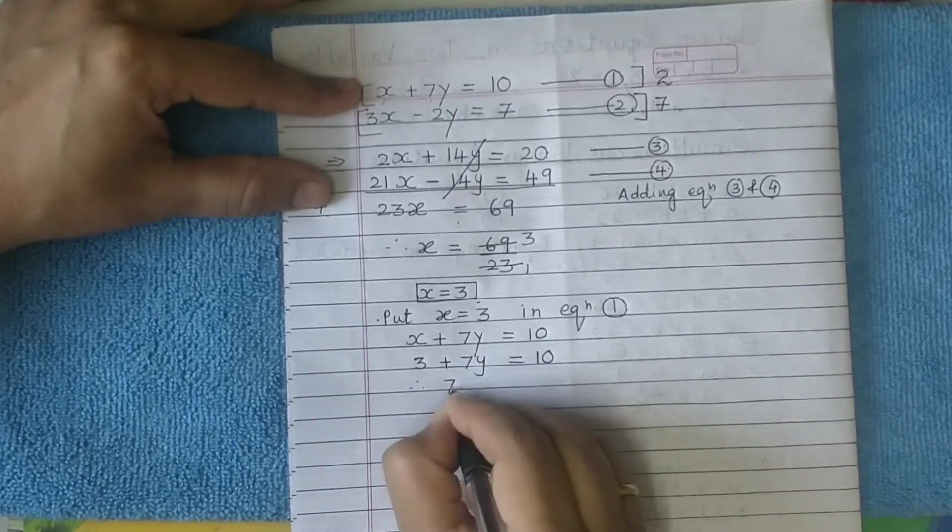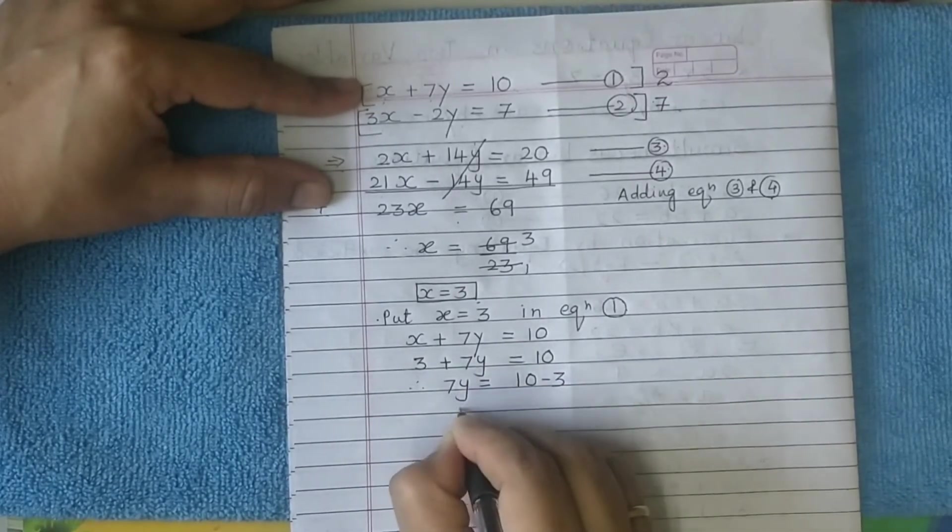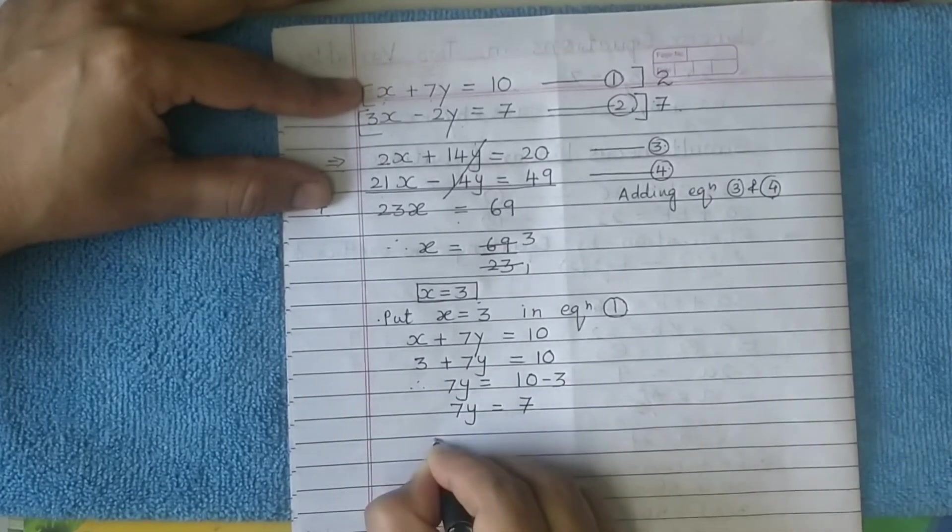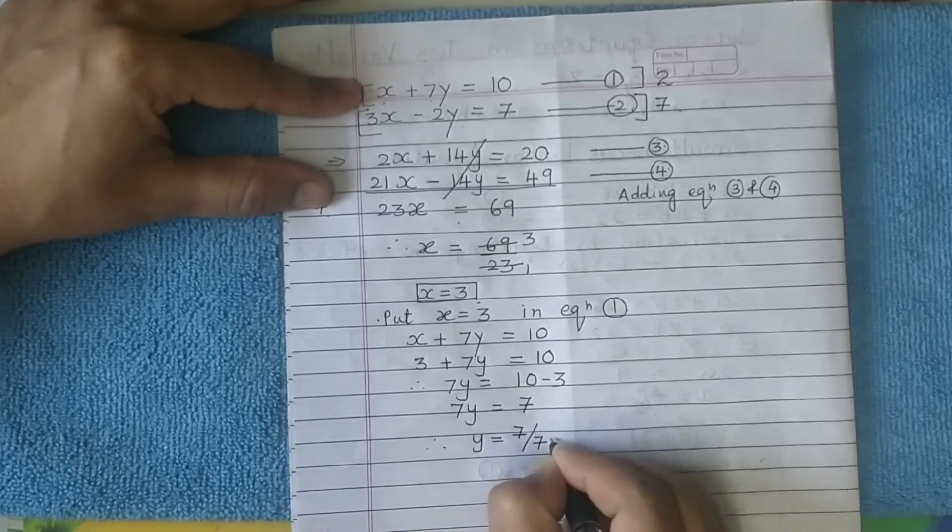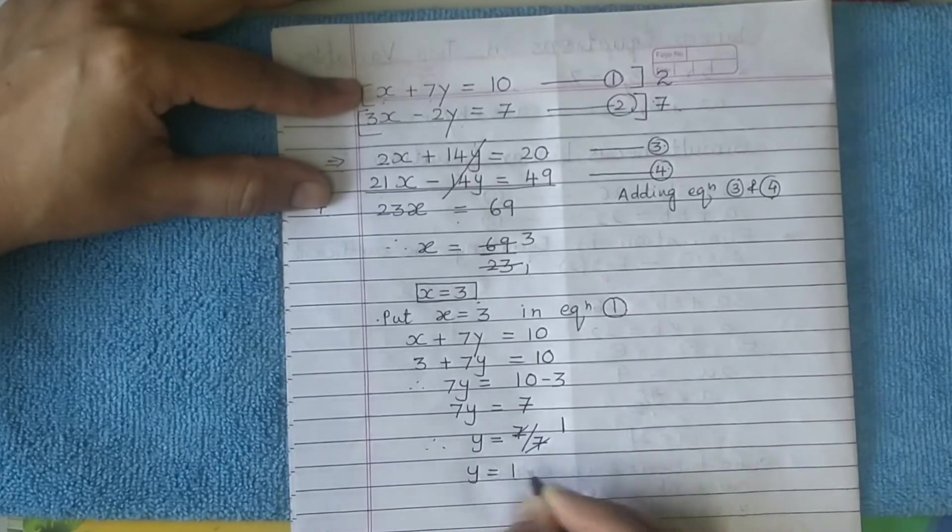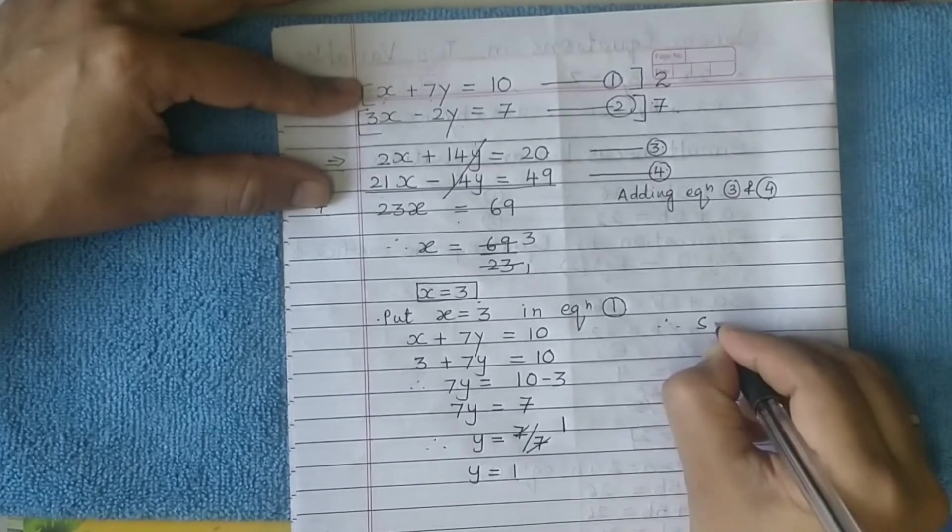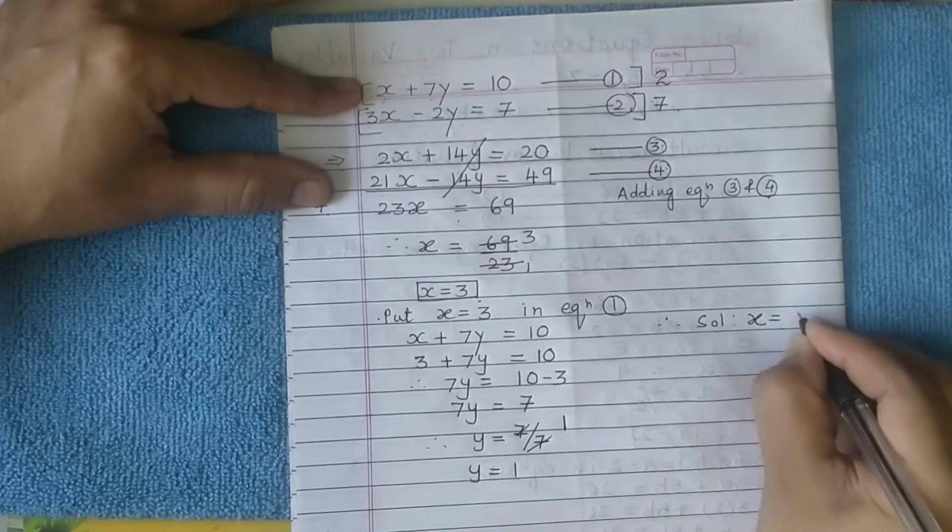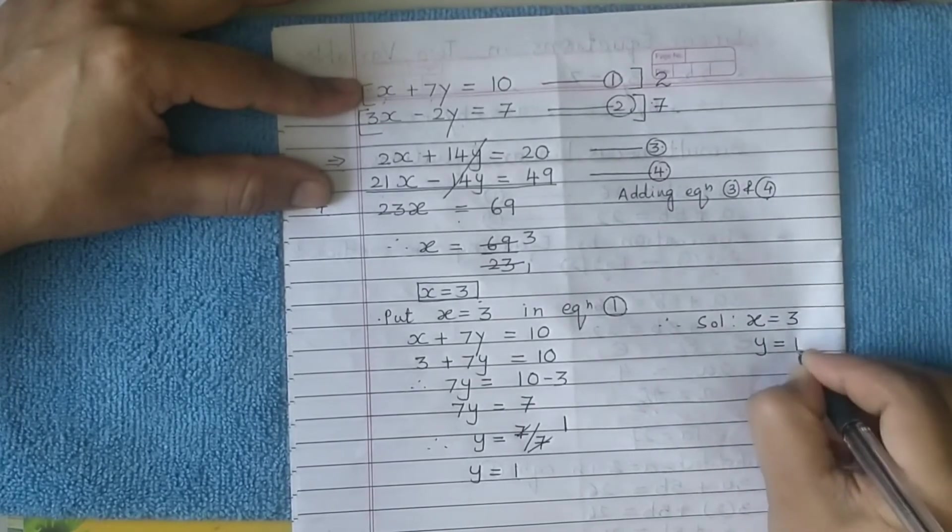Therefore 7y equals 10 minus 3. 7y equals 7. Thus y equals 7 divided by 7, which is 1. Therefore, what is our solution? x equals 3 and y equals 1.